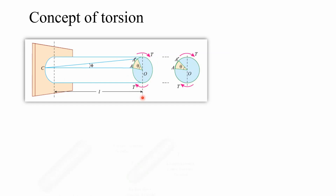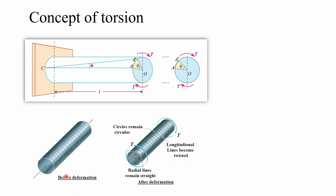Before deformation, all radii of the shaft are straight along the length. The assumption in the theory of torsion is that all radial lines remain straight both before and after deformation, and that the circle remains circular. However, whatever deformation occurs in the shaft due to the twisting moment, all the longitudinal lines become twisted.